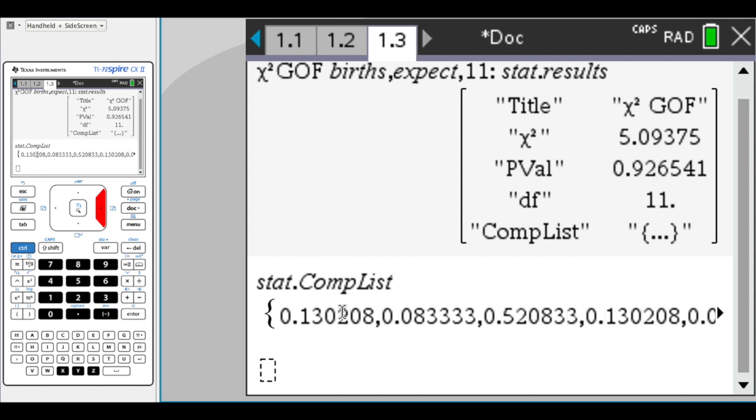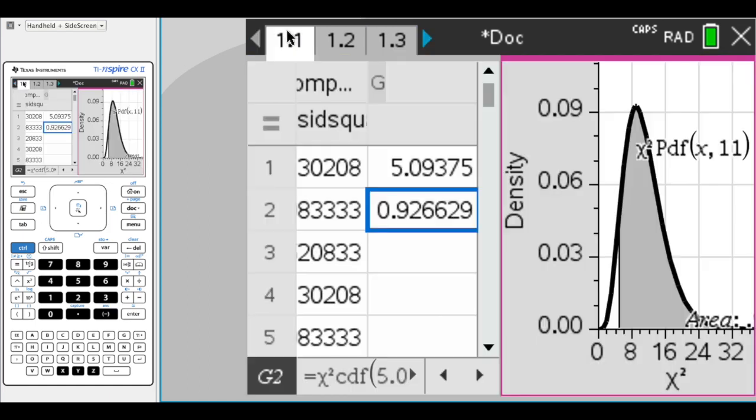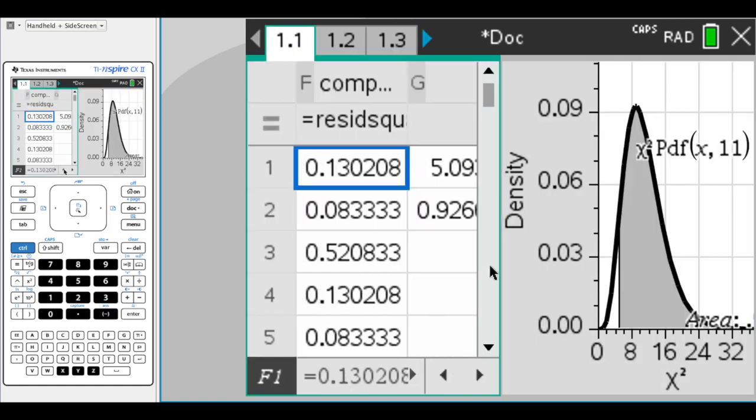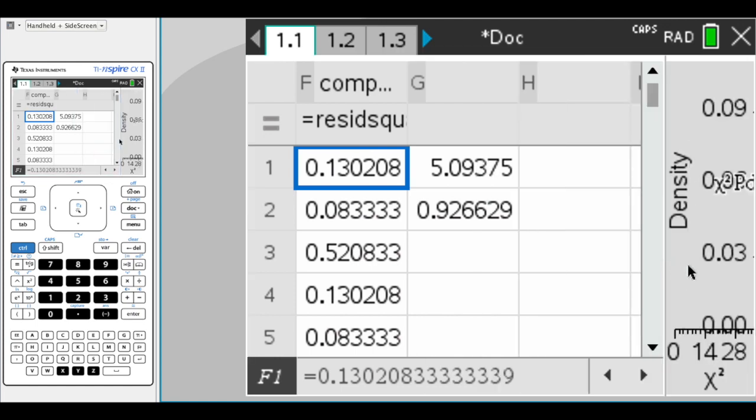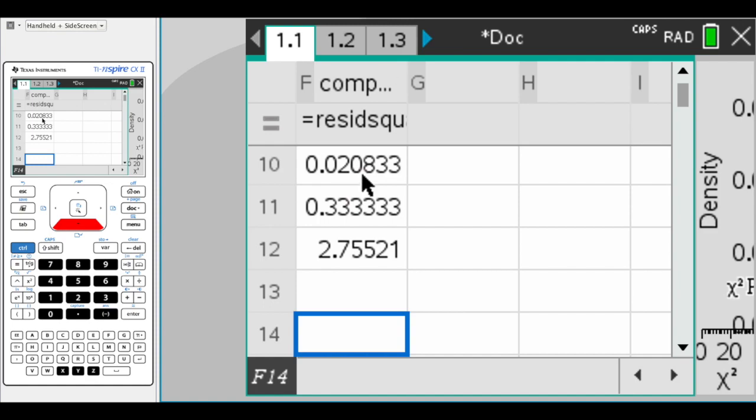Which would be the exact same numbers as, if I scrolled over just a little bit, that we have in this column F that we called components. We get the exact same values. So in conclusion, we found our chi-squared. We graphed our chi-squared distribution for degrees of freedom of 11, and we got our p-value at 0.926.